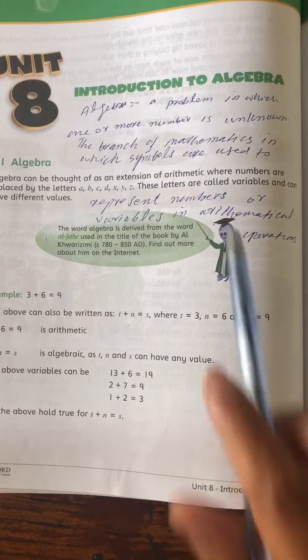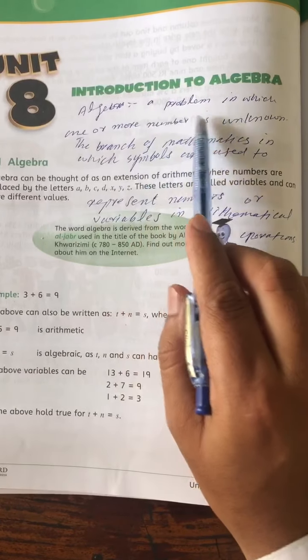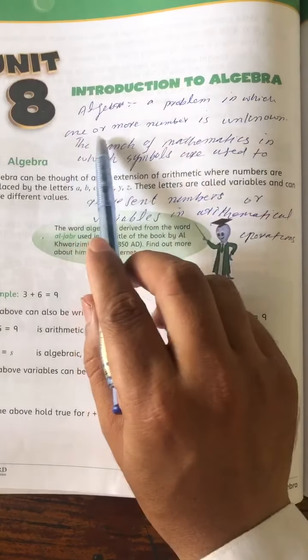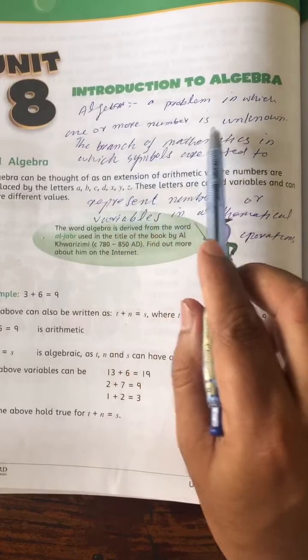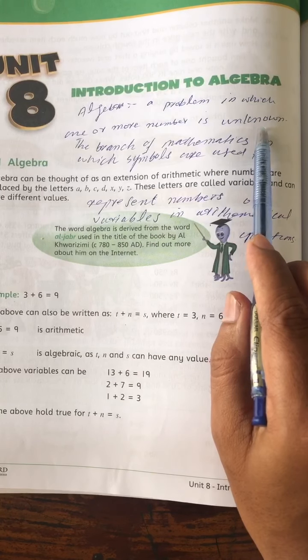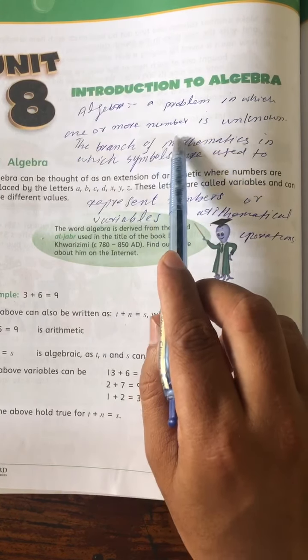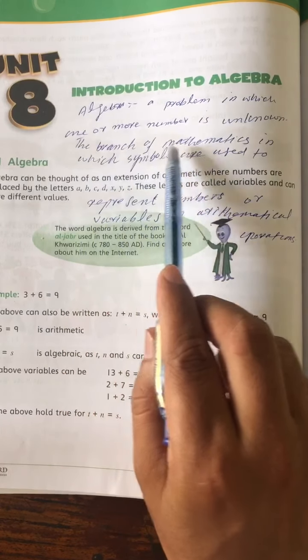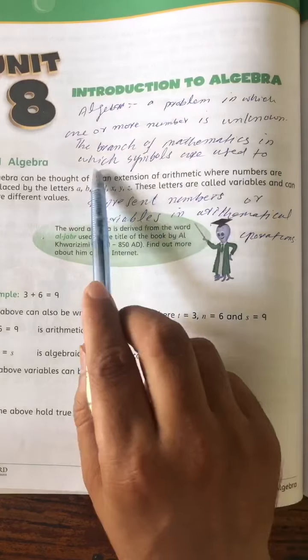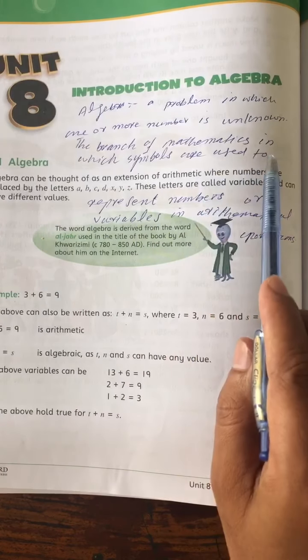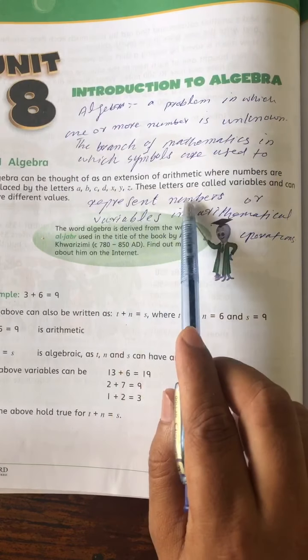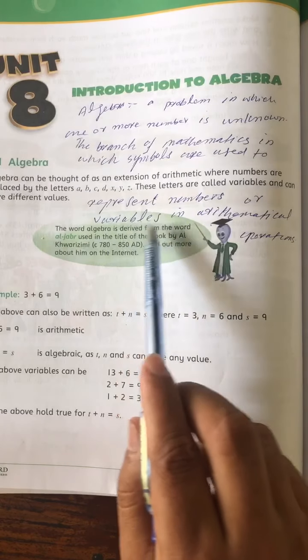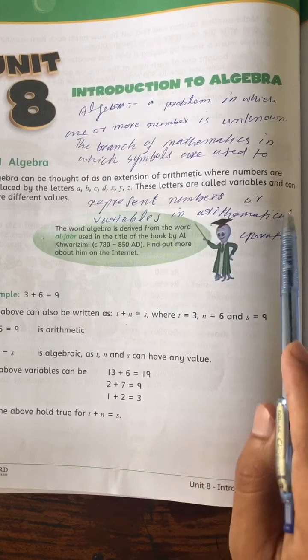What is algebra? A problem in which one or more number is unknown is called algebra. Second definition: the branch of mathematics in which symbols are used to represent numbers or variables in arithmetic operations.